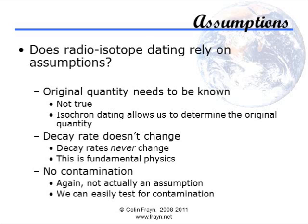But there's more. In order for several different radiometric methods — which is actually what we have — to give the same age, they would all have to be massively wrong by almost exactly the same enormous factor. It's just inconceivable that this could be the case, especially as the only changes that could affect half-lives would not be expected to affect all elements in the same way.